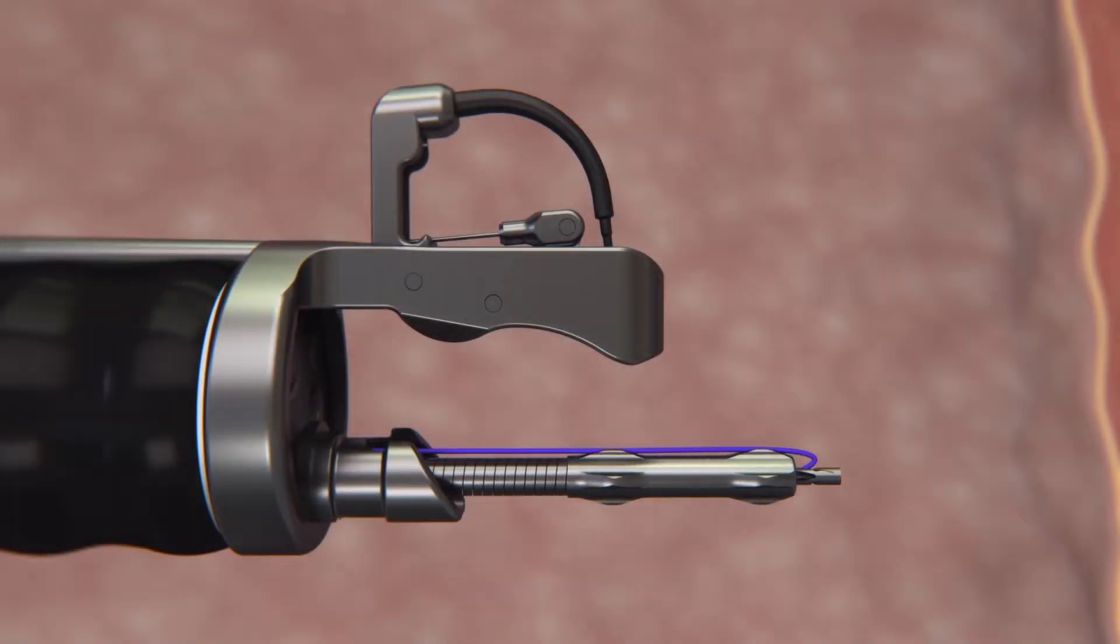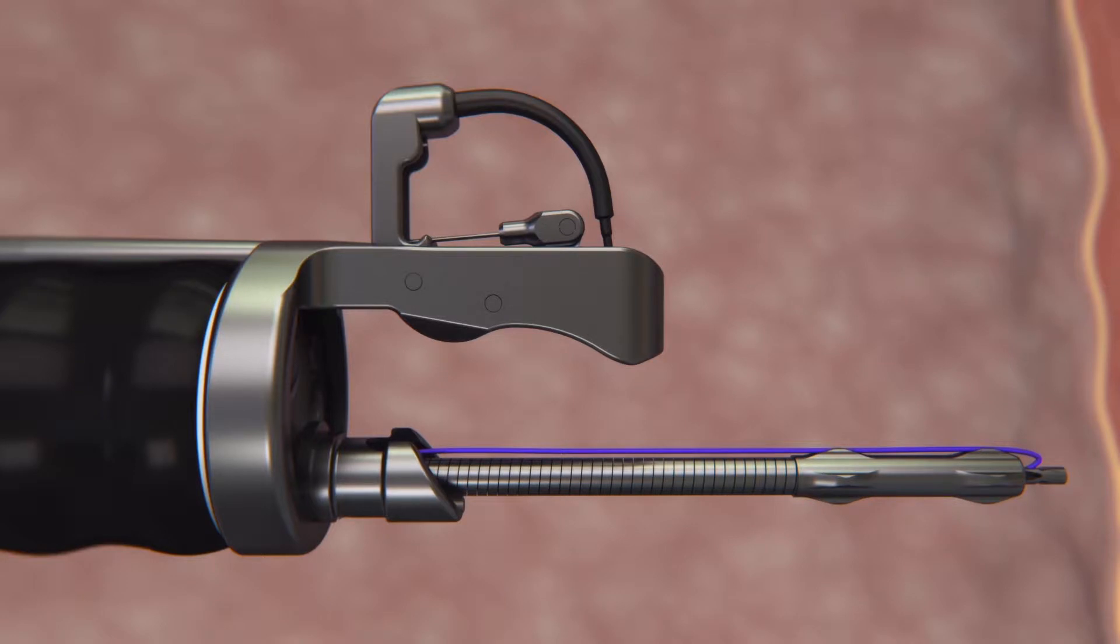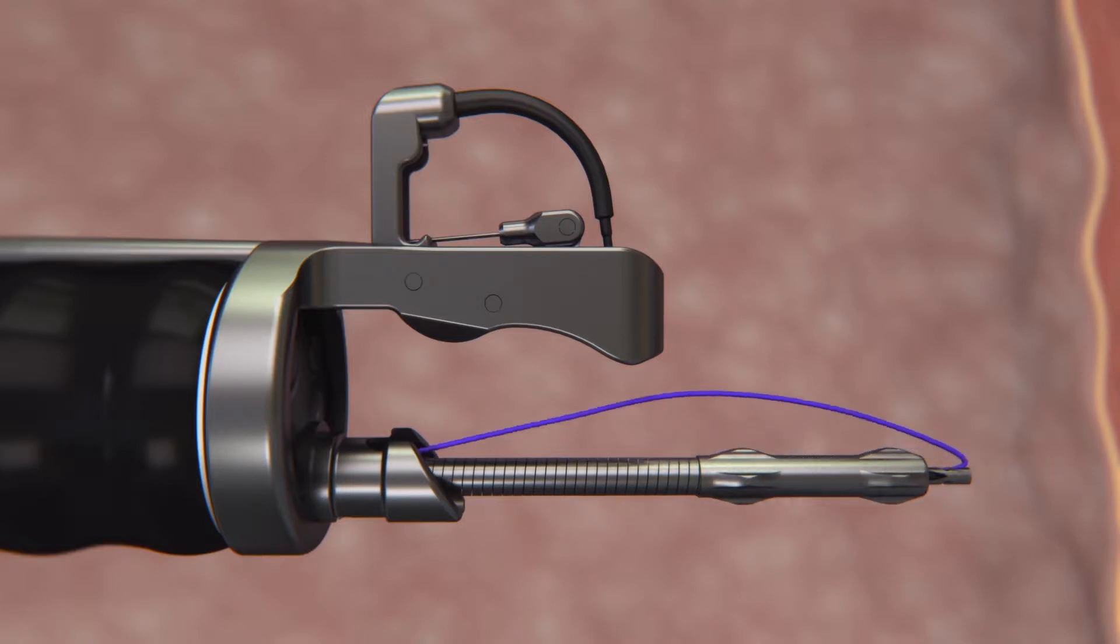Insert the anchor exchange with the anchor through the 3.7 mm scope channel. Create suture slack by extending the anchor exchange past the end cap, then draw back.